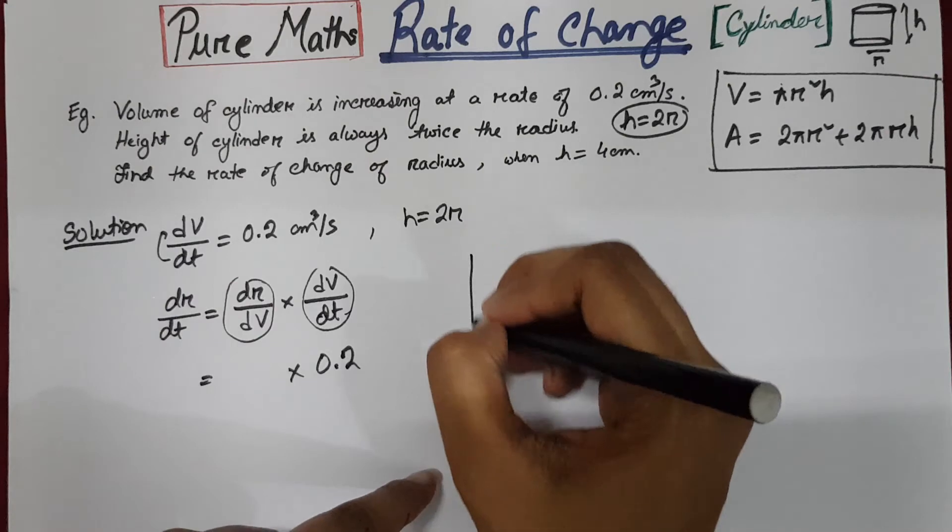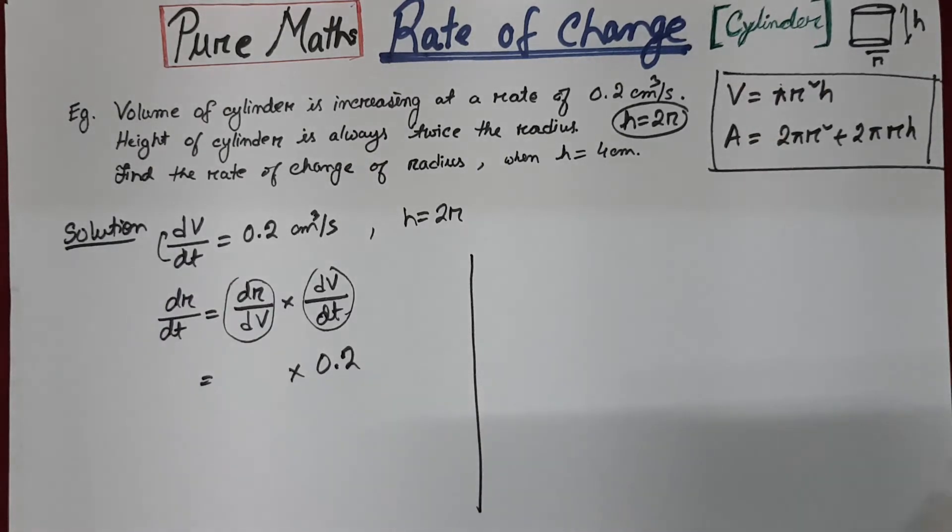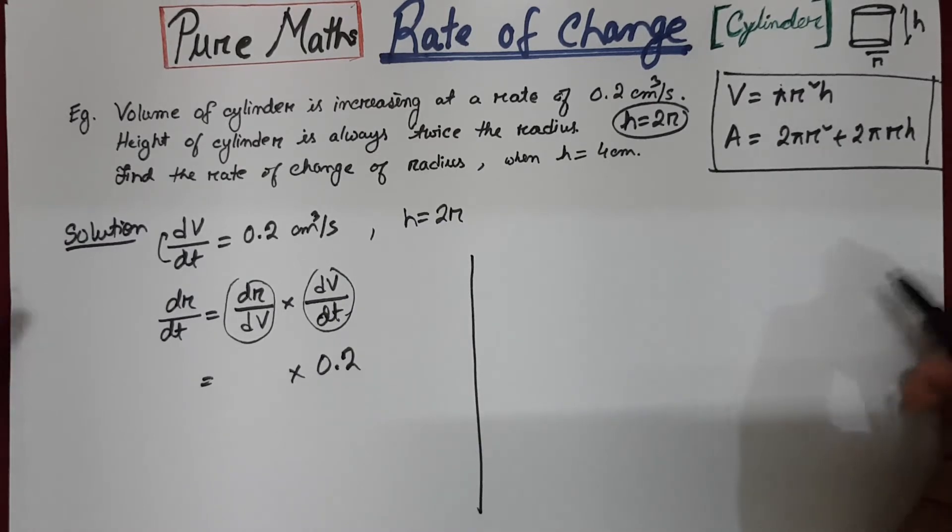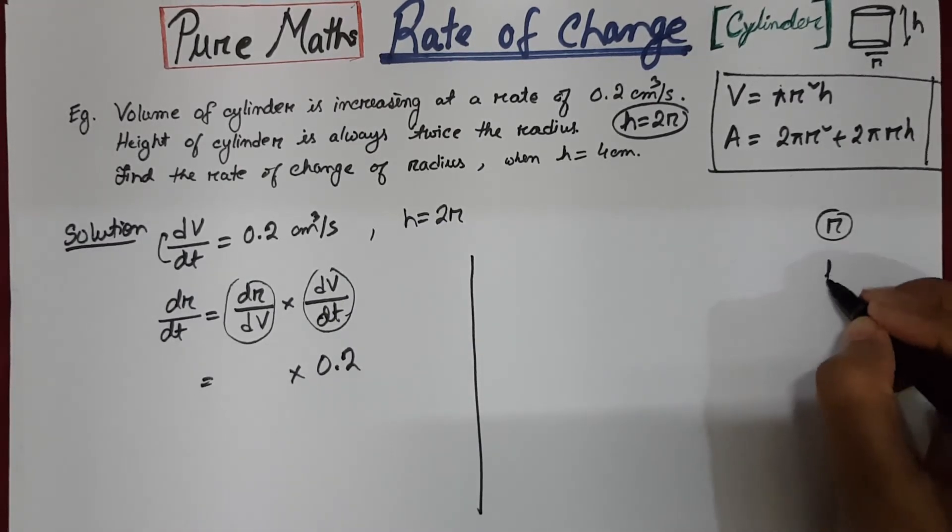And about dr by dv, the problem in case of cylinder or cone is we have two variables. We have two parameters, radius and height.